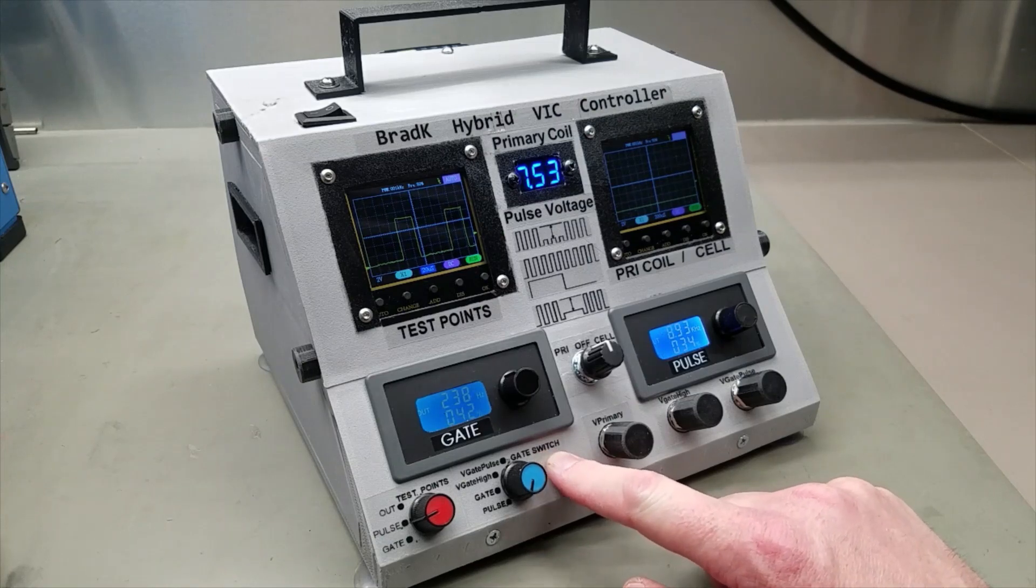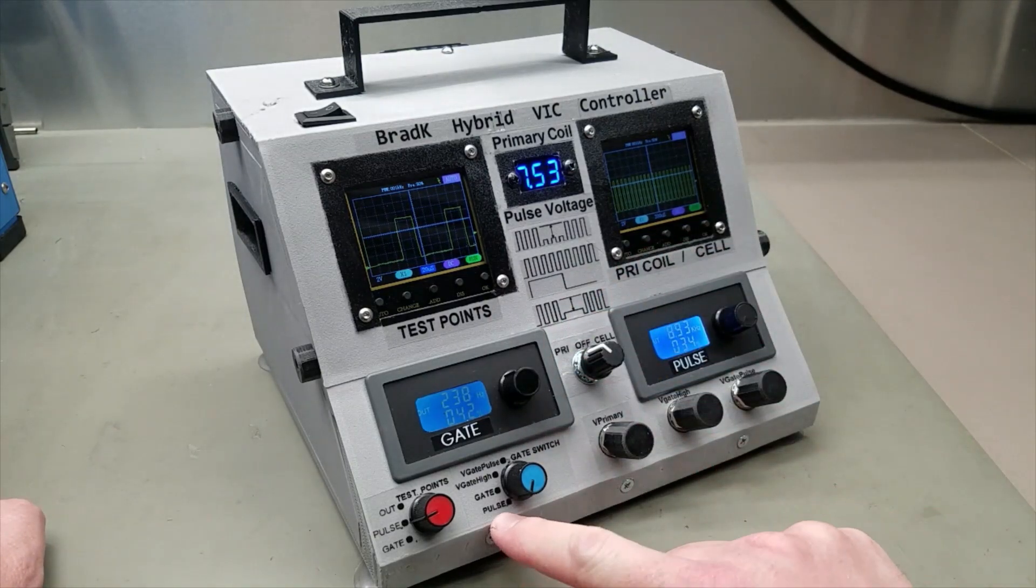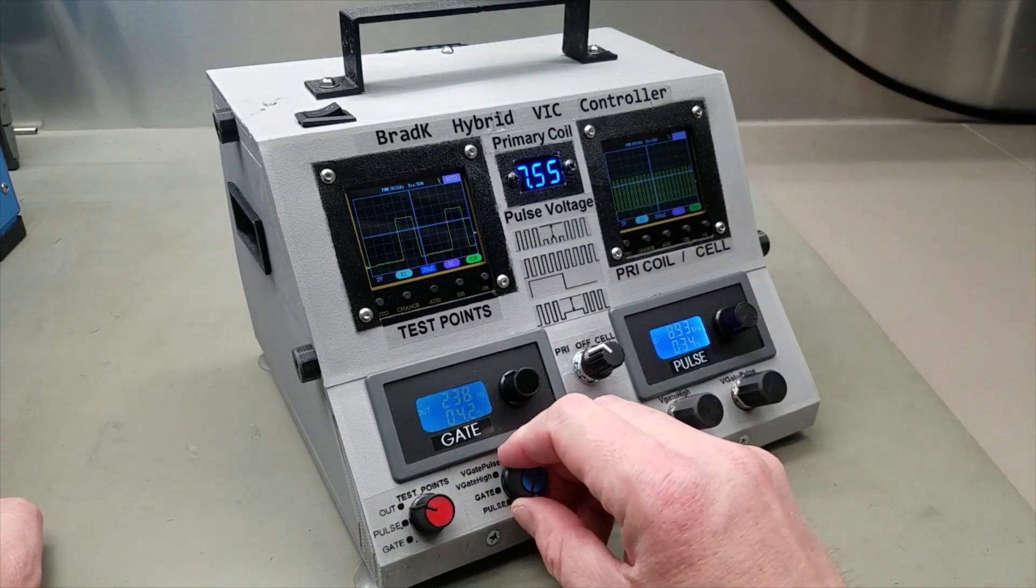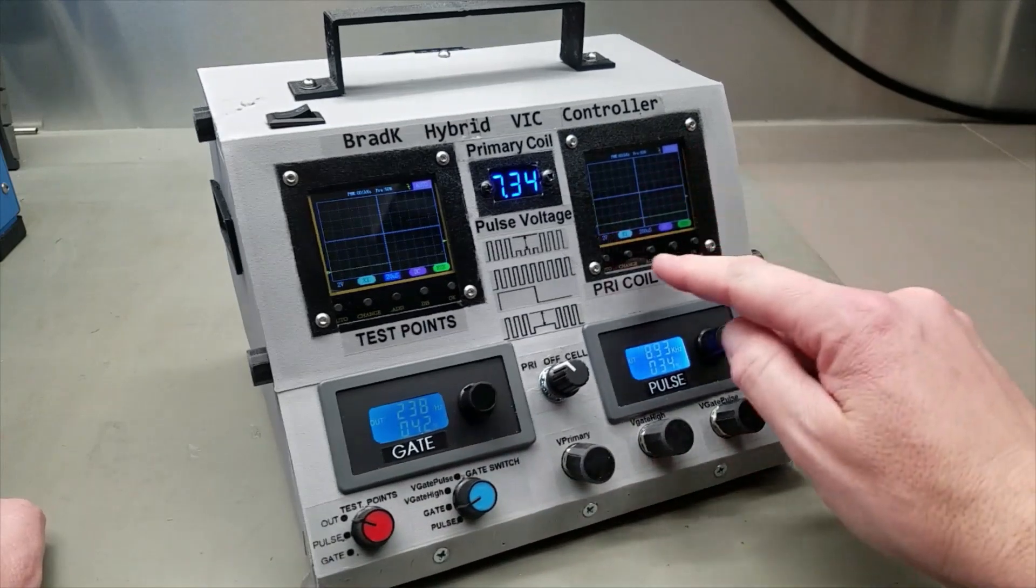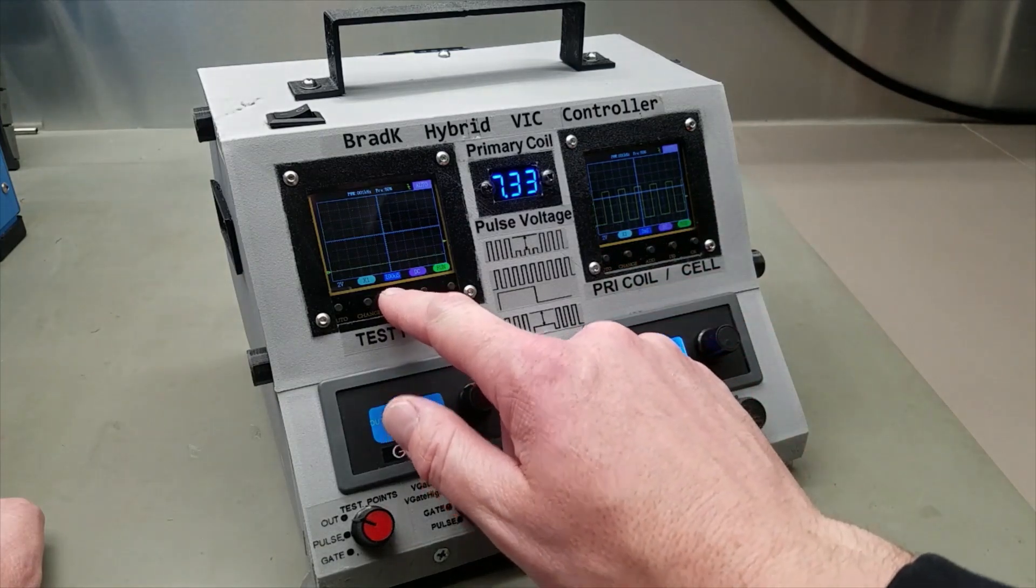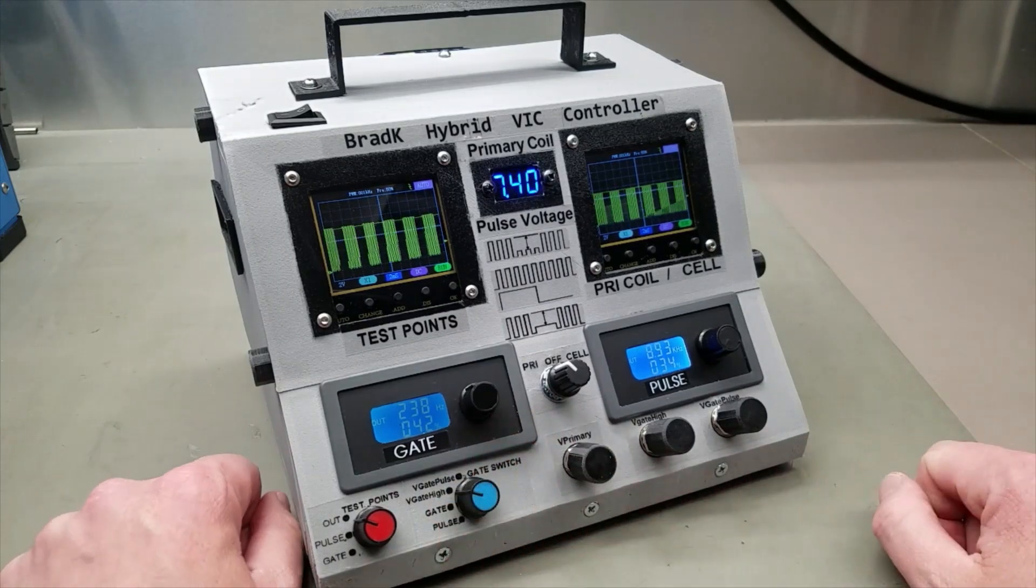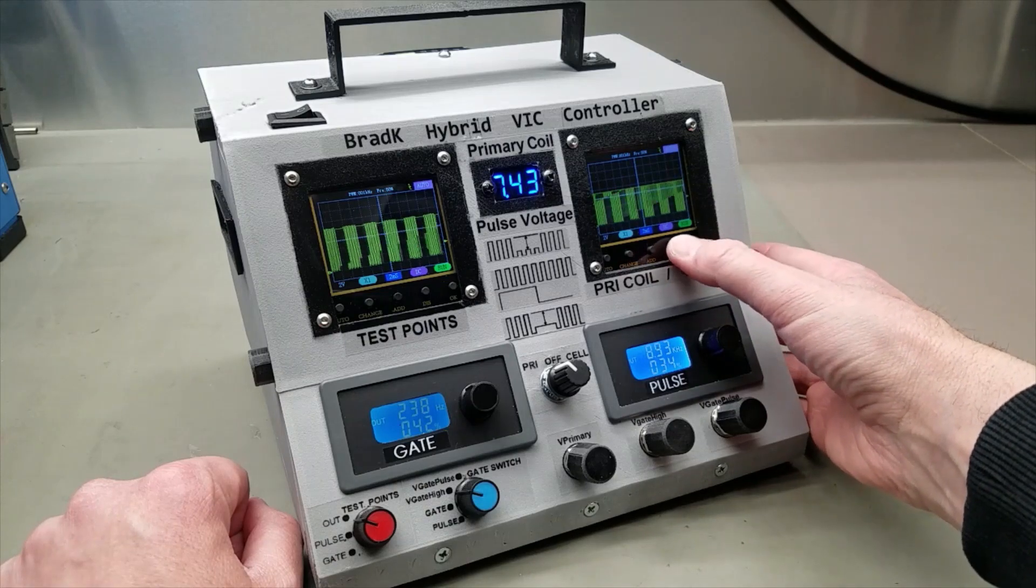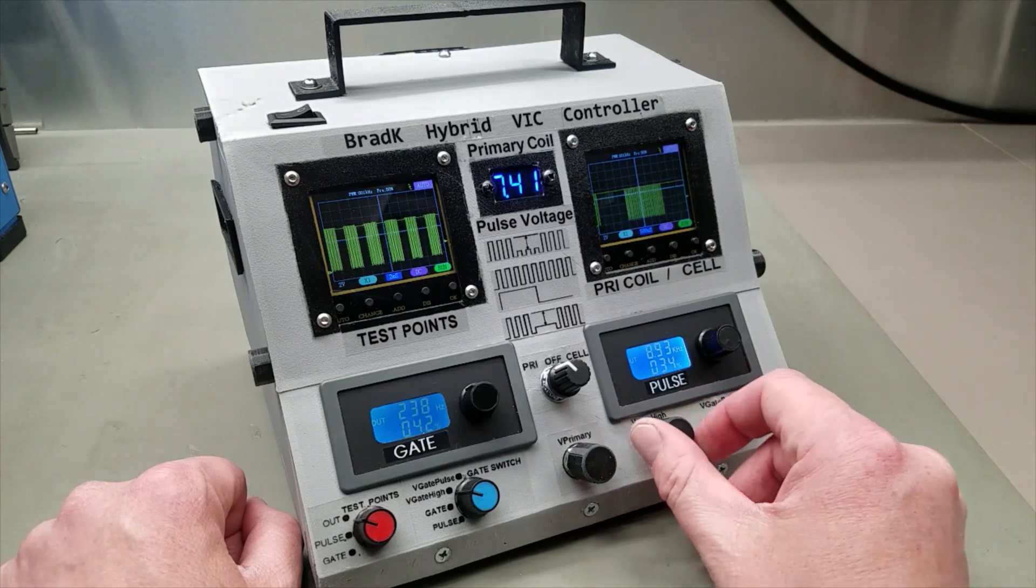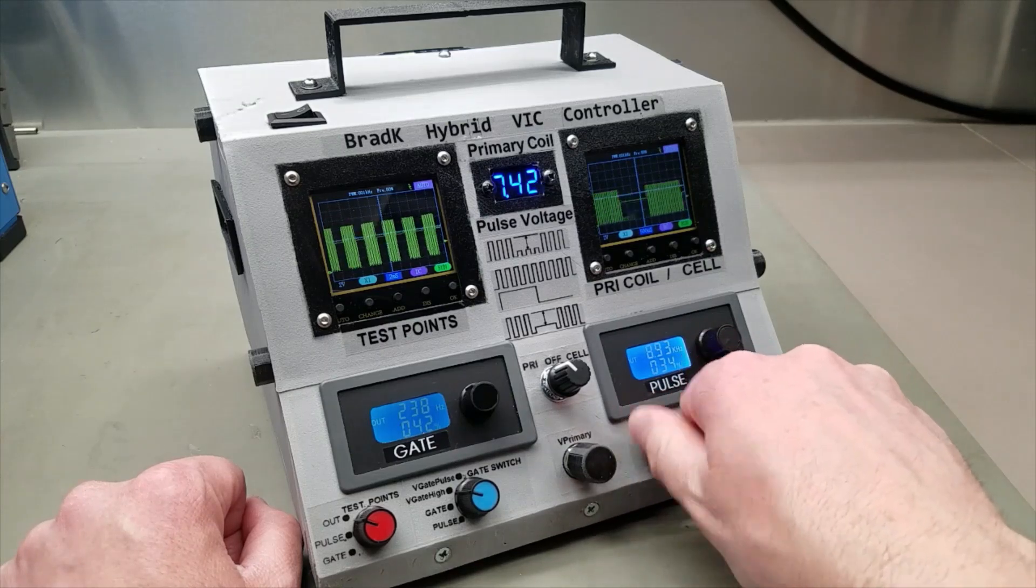The next thing we need to look at here is the gate switch. The gate switch actually determines what signal is going to the primary coil. If I put this on primary right now, you'll see it's set to the pulse, which is the same signal we're seeing here. If I change to the gate, you'll notice now I'm seeing the gate signal going across the VIC if I had the VIC connected. If I go to V-gate high, what you'll see now is actually a high signal during the gate time. And I can adjust that high signal with this potentiometer here. Now you can see it coming down.